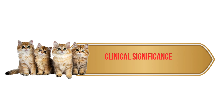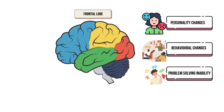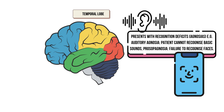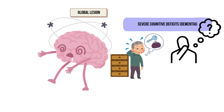Now let us delve into the clinical significance of the cerebrum. A cerebrovascular accident, or stroke, is defined as a sudden loss of focal brain function lasting over 24 hours, caused by either bleeding into the brain tissue or insufficient blood flow to a portion of the brain. Damage to the cerebrum can lead to various clinical symptoms depending on which lobe has been impacted. Patients with a frontal lobe lesion can present with personality changes, behavioral changes, and inability to problem solve. Parietal lobe lesion patients can present with contralateral hemisphere neglect syndrome, where the patient neglects to pay attention to the side of the body opposite to the lesion. Temporal lobe lesions can present with visual and auditory deficits, while occipital lobe lesions can present with visual field defects. Patients with a global lesion can present with severe cognitive deficit, also known as dementia.